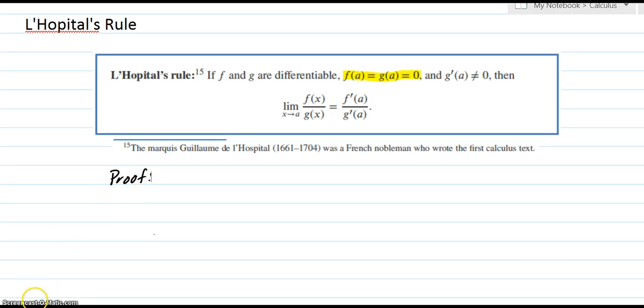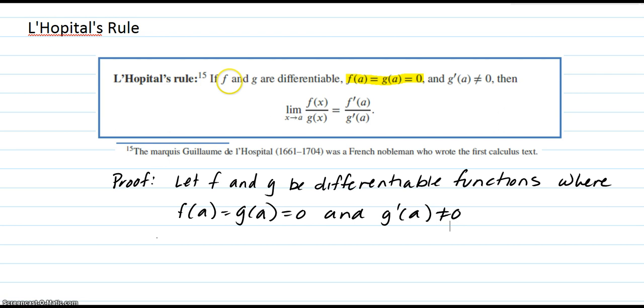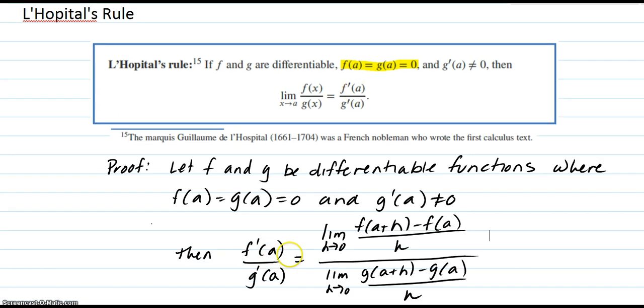So let's look at the proof. I'm going to start off by letting f and g be differentiable functions, where f(a) equals g(a), which equals 0, and the derivative at a of g is not 0. So then I'm going to start with the right side here, because I know the definition of the derivative of each of these. So f'(a) is the limit as h goes to 0 of [f(a+h) - f(a)]/h by our definition of derivative. And g'(a) is similar, down below here.